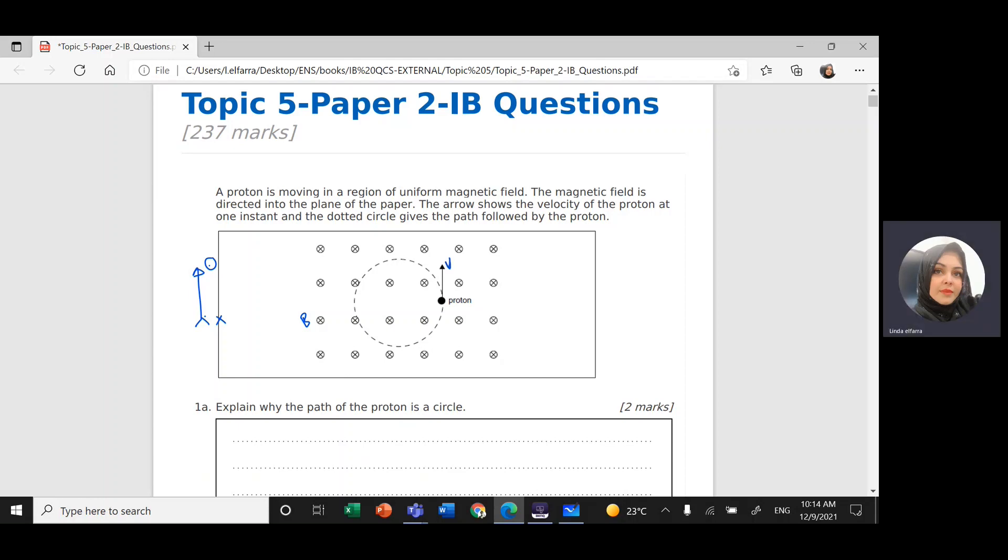If I want to use my right hand, put the thumb in the same direction of the motion of this proton. Fingers, all your fingers will be inside the page toward the direction of magnetic field. What comes out of your palm will be the magnetic force. So the magnetic force will be toward the center. This is F magnet, which also will be the centripetal force that will cause this proton to move in a circular path.